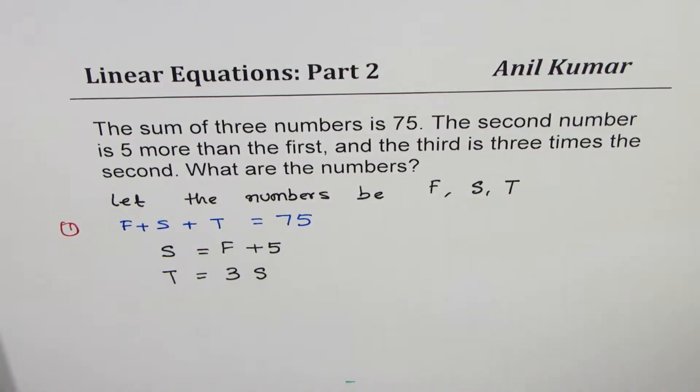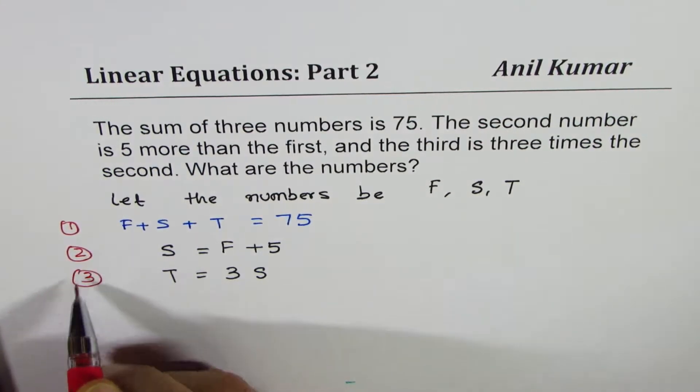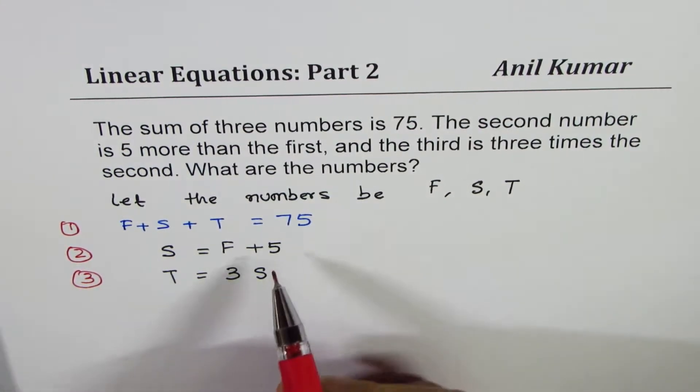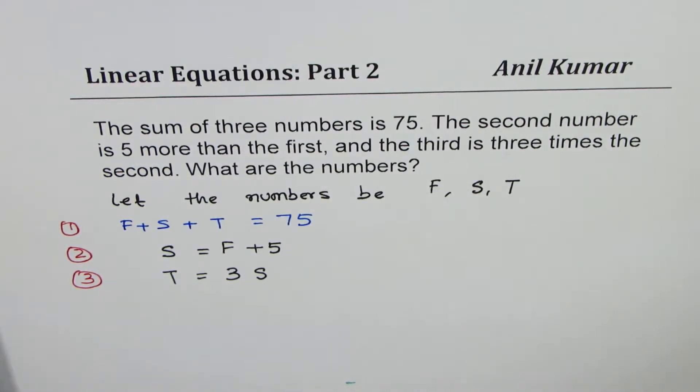We have three variables, three equations, that means we can always solve it. You always have to make the same number of equations as variables to solve and get an exact answer. If you don't have three equations for three variables, you can actually have more than one answer.